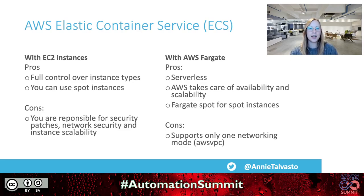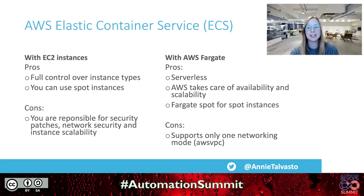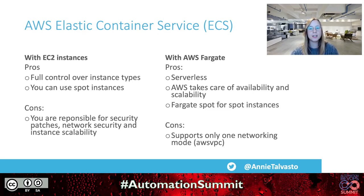AWS ECS, or Elastic Container Service, is a scalable container orchestration platform by AWS designed to run, stop, and manage containers in a cluster. Containers are defined as part of task definitions. You can use ECS with EC2 instances — best for long-running tasks — or AWS Fargate, which is good for serverless tasks.